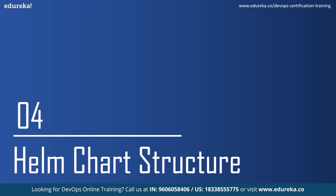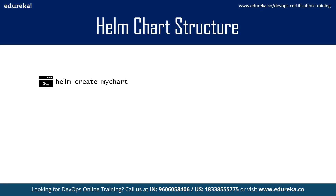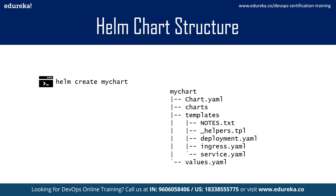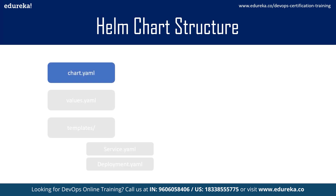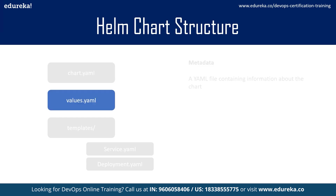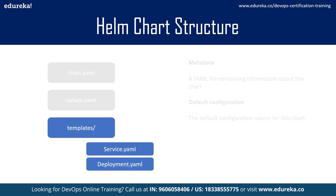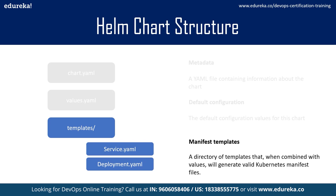Let's look at the chart structure. You can create a chart in your terminal by typing helm create followed by the name of your chart. After creating the chart, you'll end up with a list of files in the directory. The three main things are: the chart.yml file, which is a metadata file containing information about the chart including version; the values.yml, which is the default configuration file — the heart of Helm; and the templates directory, which usually has a service.yml and deployment.yml, containing templates that are combined with values files to create valid Kubernetes manifest files.